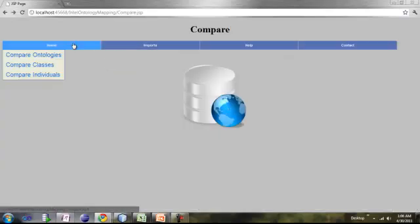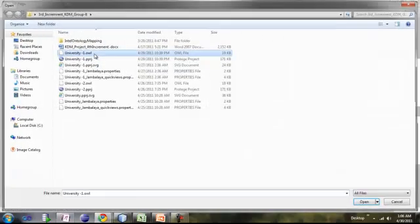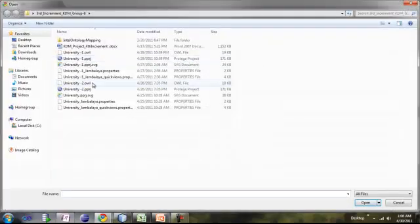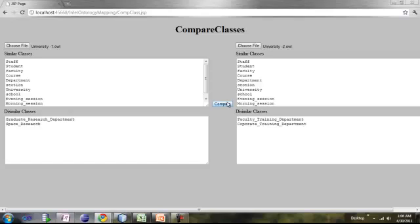Now let's compare it for classes. Importing ontologies and comparing them. The bottom one gives the dissimilar classes. Now you can see the top two having same classes but the bottom ones having different classes.